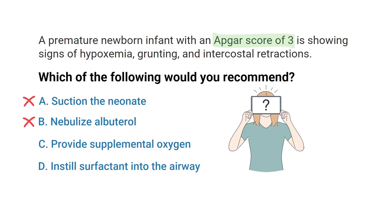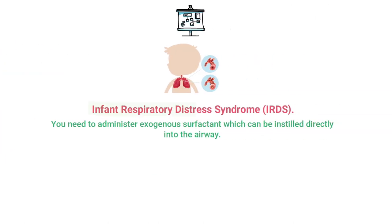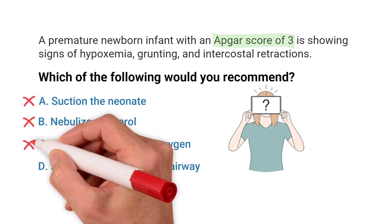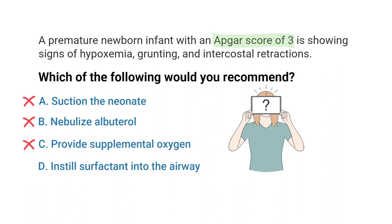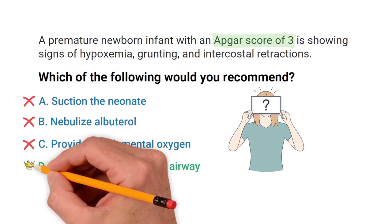Although supplemental oxygen may help with the infant's hypoxemia, in this case with severe respiratory distress, more extensive measures are needed — so we can rule that one out as well. By using what we know about treating high-risk infants with severe respiratory distress, as well as the process of elimination, we can determine that the correct answer is D: instill surfactant into the airway.